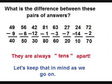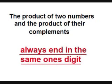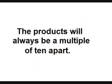Pairs of numbers such as these, that end in the same ones digit, will always have a difference that ends in zero — they'll always be ten, twenty, thirty, forty apart, and so forth. Let's look at what we now know: two numbers that total ten are complements; the product of two numbers and the product of their complements always end in the same ones digit; and the products will always be a multiple of ten apart.